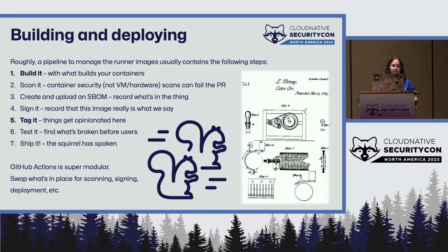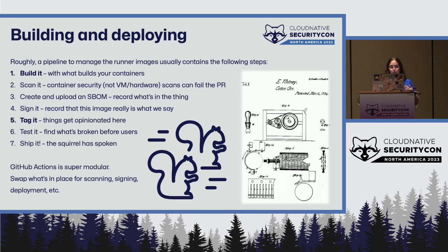Roughly speaking, a pipeline to manage your runners will contain: build it, scan it, SBOM it, sign it, tag it, test it, ship it. GitHub Actions is super modular, so swap in whatever you have in place for scanning, signing, tagging, and deploying. I want to talk a bit about building and tagging because they're both interesting in this use case.